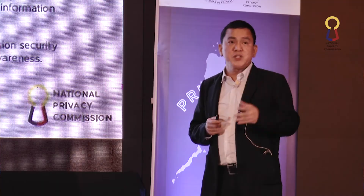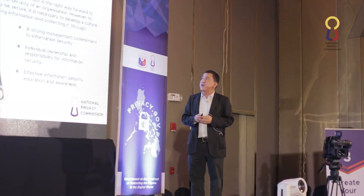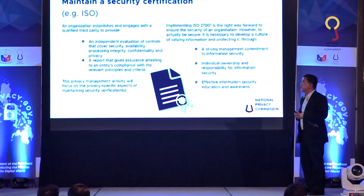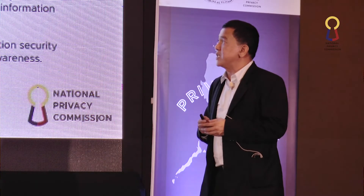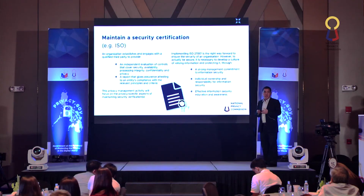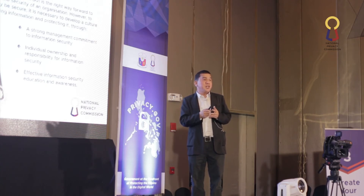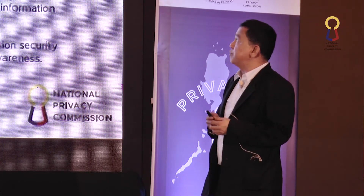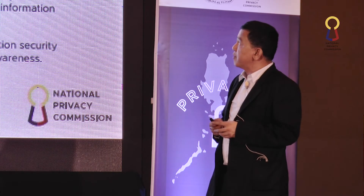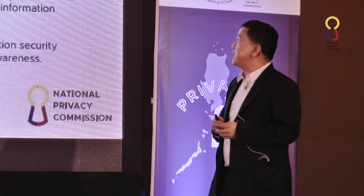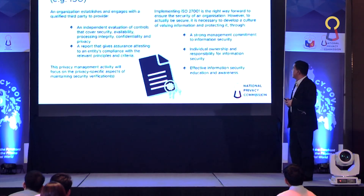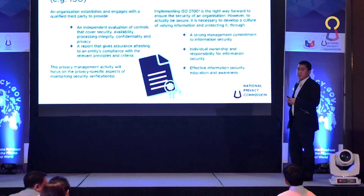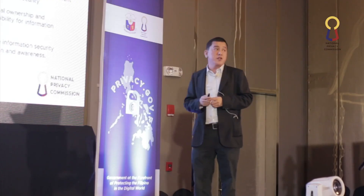Lastly, maintain a security certification. An organization establishes and engages with a qualified third party to provide an independent evaluation of controls covering security, availability, processing, integrity, confidentiality, and privacy. Although ISO 27001 or 27008 is not an assurance that you're fully compliant with the regulation or mandate of the National Privacy Commission, it is somehow an assurance that you're partially compliant. Implementing ISO 27001 is the right way forward, but to actually be secure, it is necessary to develop a culture of valuing information through strong management commitment, individual ownership and responsibility, and effective information security education and awareness.